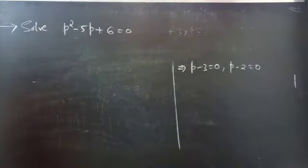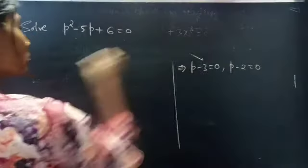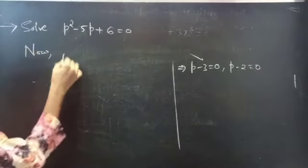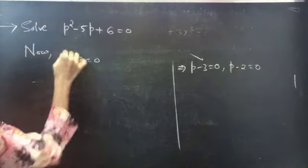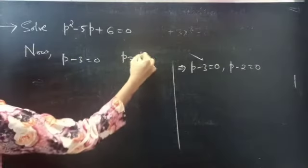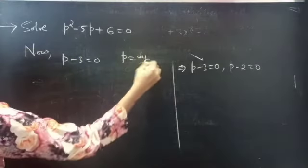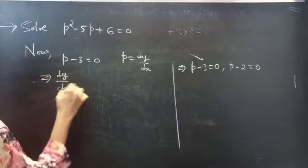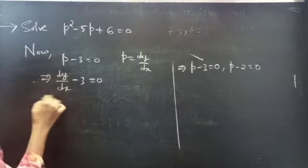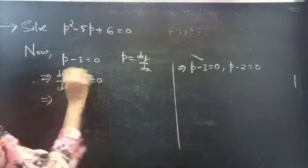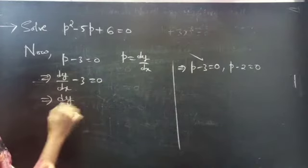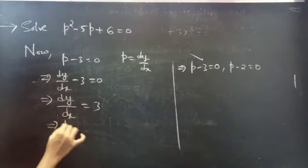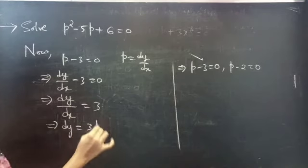Let's find the solution from P minus 3 equals to 0. Now, consider P minus 3 equals to 0. Put P equals to dy by dx. Then, dy by dx minus 3 equals to 0. Take this 3 to RHS, you get dy by dx equals to 3. Then, you can rewrite this as dy equals to 3 into dx.